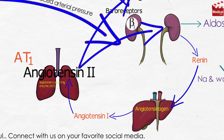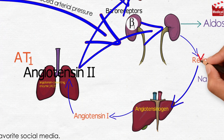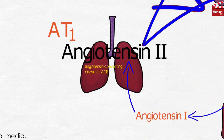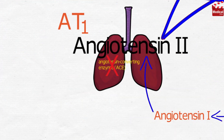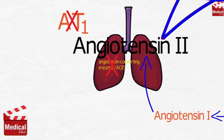We can conclude how drugs may interfere with this mechanism: either they inhibit renin itself, inhibit angiotensin-converting enzyme, or block angiotensin-2 type 1 receptors.